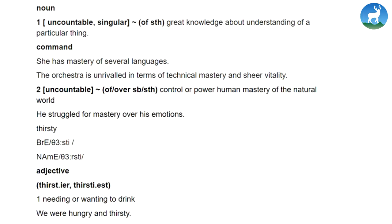The second meaning of mastery is uncountable, followed by 'of somebody or something', meaning control or power. Examples include: 'human mastery of the natural world' and 'He struggled for mastery over his emotions.'